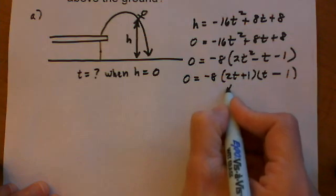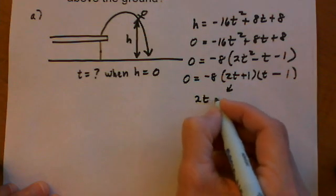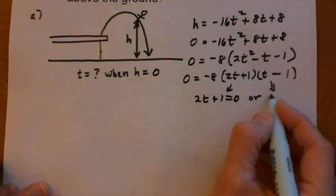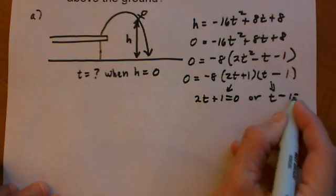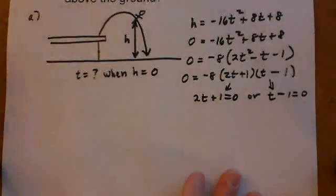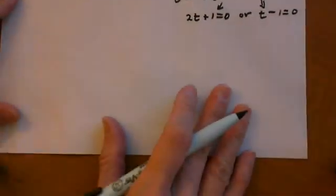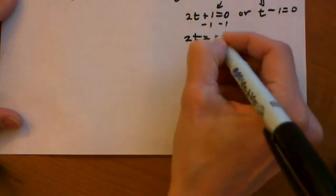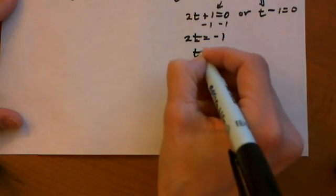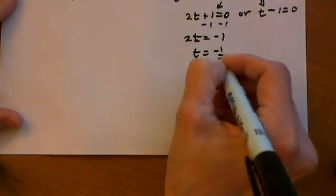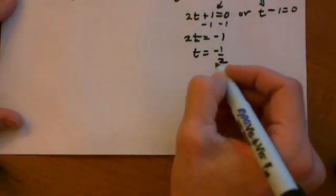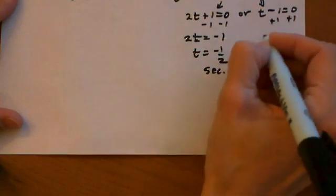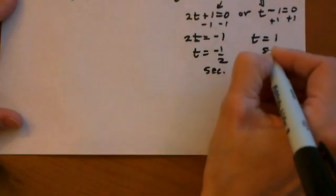Now we're going to set each factor equal to 0 separately. Each factor that contains a variable. So we're going to say 2t plus 1 equals 0, or t minus 1 equals 0. And that will give us our solutions for the equation. So solving this out, minus 1 minus 1, we have 2t is equal to negative 1, or t equals negative half. And that would be in seconds. And plus 1 plus 1, t equals 1 second.